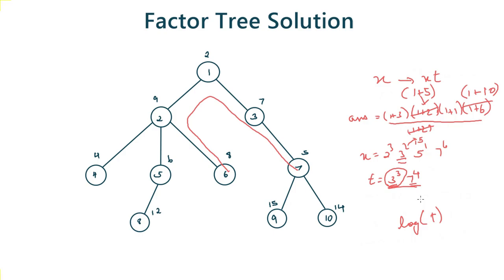We can do the same thing for removing a number from a product. Say we found the answer for x×t and now want to remove t. We prime factorize t again, divide out the existing contribution and multiply back with the updated contribution. For prime factor 7, instead of multiplying by (1+10), since we are removing we multiply by (1+2) where 6−4=2. So multiplying or removing a number from an existing product can be done in O(log t), and prime factorization in O(log n) can be done using the sieve method — see the link in the description.